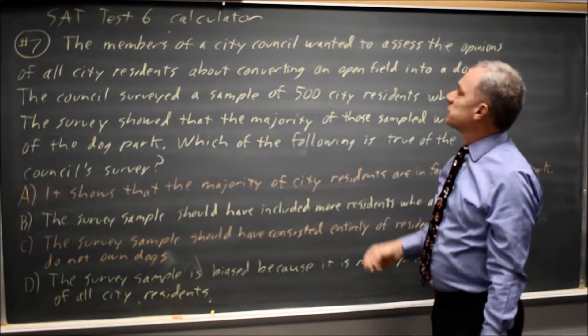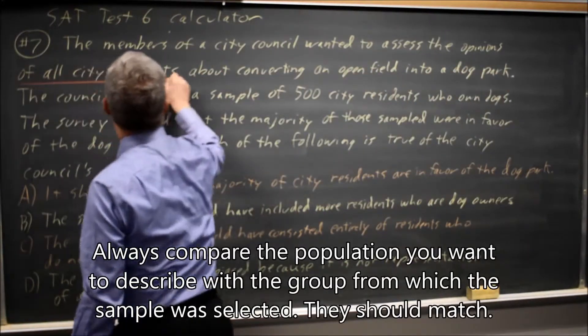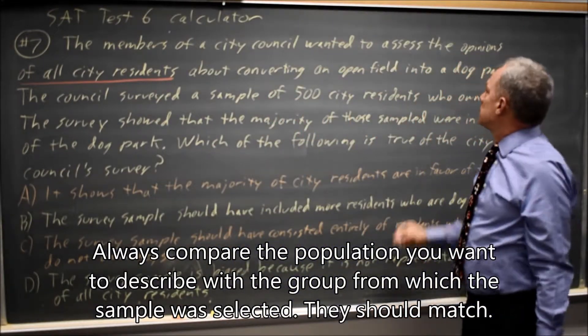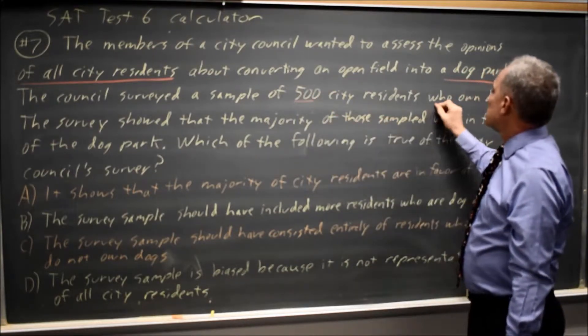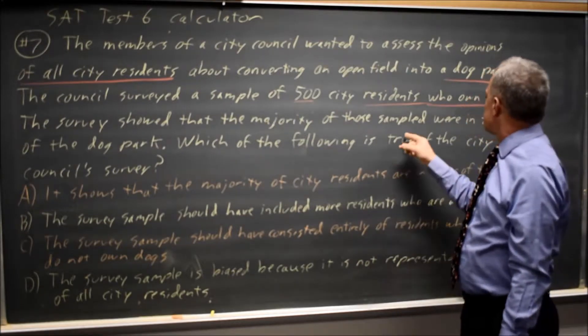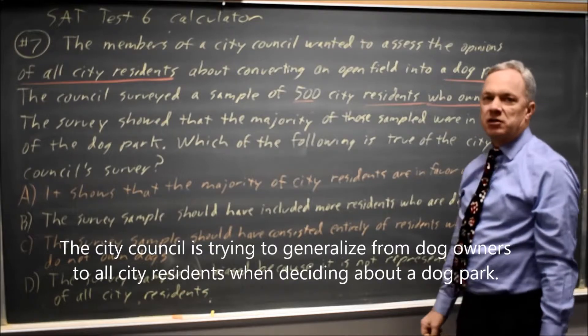The members of a city council wanted to assess the opinions of all city residents about converting an open field into a dog park. The council surveyed a sample of 500 city residents who owned dogs. The survey showed that the majority of those sampled were in favor of the dog park. Which of the following is true of the city council survey?